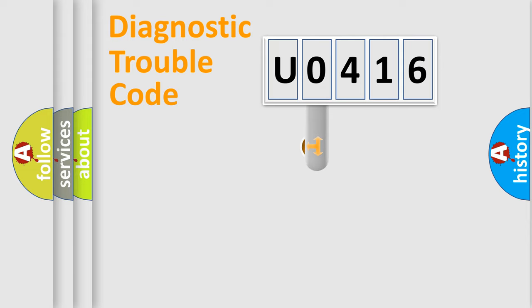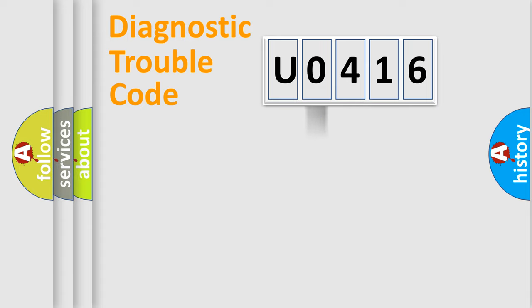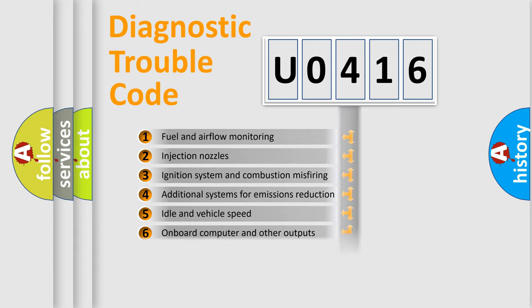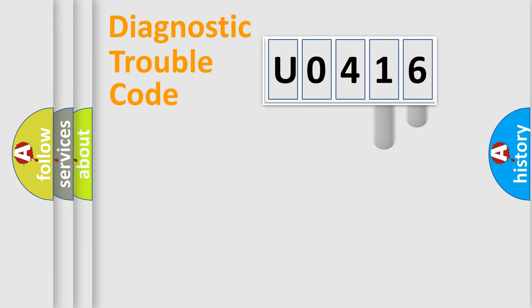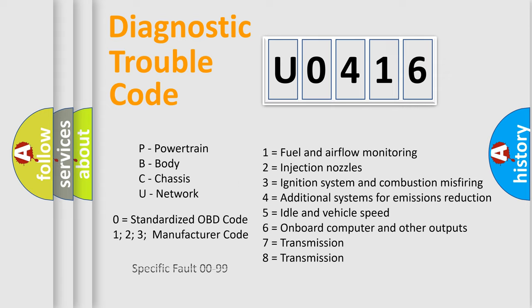This distribution is defined in the first character of the code. If the second character is expressed as zero, it is a standardized error. In the case of numbers 1, 2, or 3, it is a more manufacturer-specific expression of the car error. The third character specifies a subset of errors. This distribution is valid only for the standardized DTC code, and only the last two characters define the specific fault of the group.